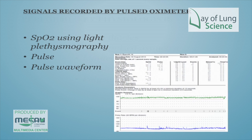Starting with basic pulse oximetry — this is just a trace from a pulse oximeter. This is essentially a normal study, and the only channels shown are SpO2 and pulse. The pulse waveform is always recorded with the saturations but not always displayed; it depends on the software.